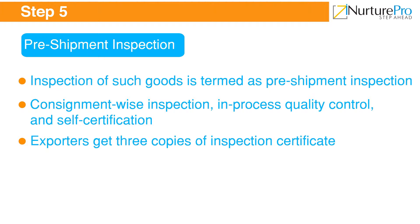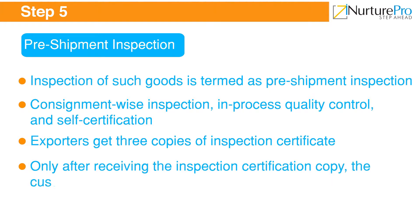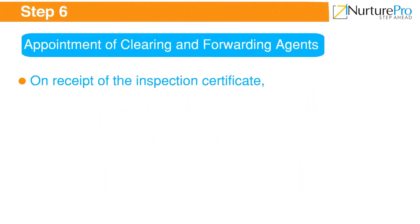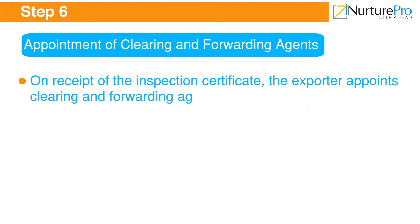Under the second scheme, no payment is made when goods are dispatched from the factory; instead, a bond is signed with the excise authorities. The bond is usually backed by a bank guarantee or surety to an amount equivalent to the excise duty. To get clearance from the excise authority, the exporter must fill Form AR4 or AR4A and submit it to the Central Excise Range Superintendent.